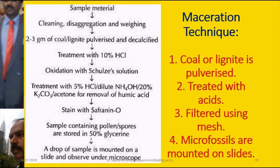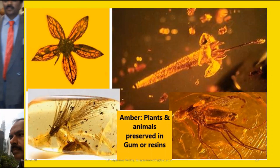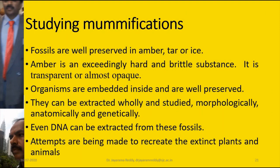This is the maceration technique — simply take coal or lignite, pulverize it, treat it with acids, filter it, then study the microfossils under a microscope after mounting on a slide. The last type of fossil is amber, where a plant or animal is actually preserved in gum and resin. This makes it easy to isolate the exact structure of the fossil, where you can study morphology, anatomy, and even genetics of the plant — including extracting DNA.